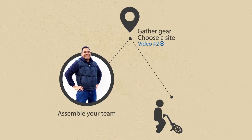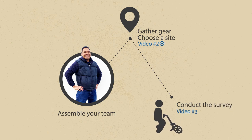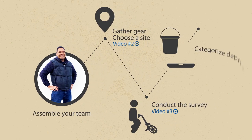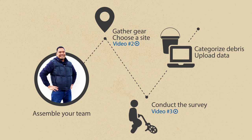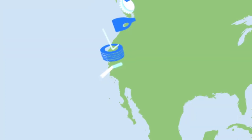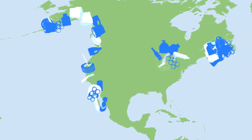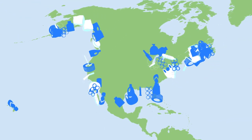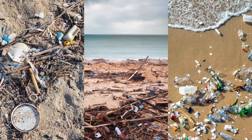She'll then conduct the survey — that's the third video. Then she'll categorize her data and upload it to the NOAA MDMAP database, which is covered in the fourth video. After that data is uploaded, NOAA reviews it and adds it to the larger database where it helps paint a picture of debris on our shores.